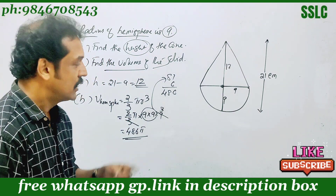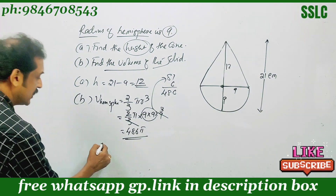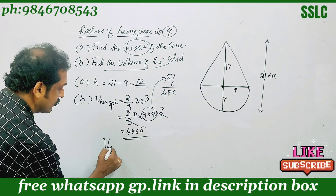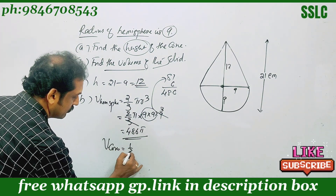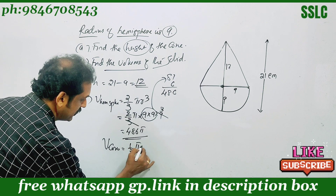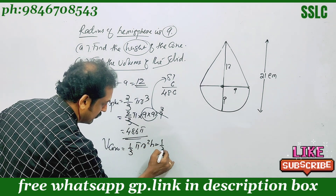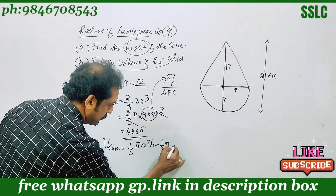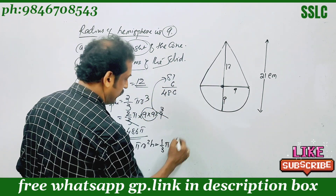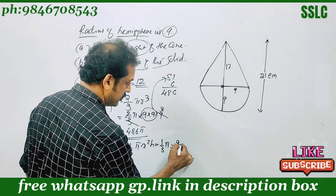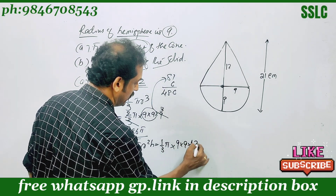Now, we are going to have 486. The volume of the cone is 1 by 3 pi r squared. That is 1 by 3 pi. The radius is also 9, that is 9 into 9. The height is 12.